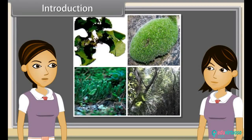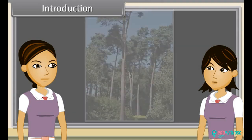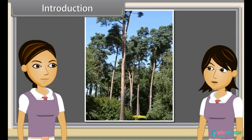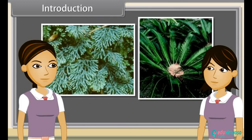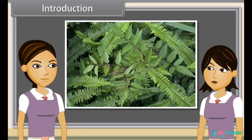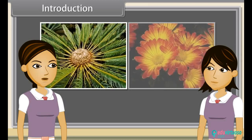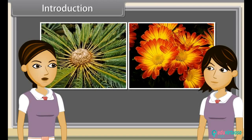Sharmila, as we have already discussed earlier, land plants are divided into thallophyta, bryophyta, and tracheophyta. Tracheophyta includes vascular plants. These vascular plants are pteridophytes, gymnosperms, and angiosperms. We have already discussed pteridophytes. Now we are going to study gymnosperms and angiosperms.